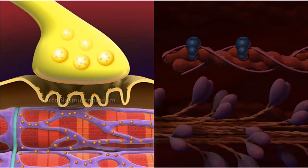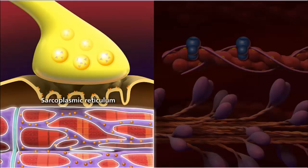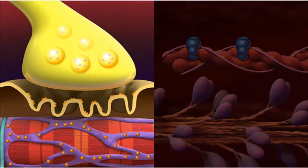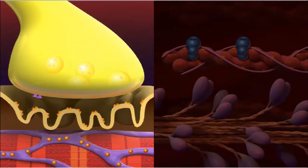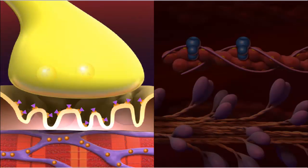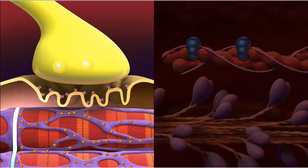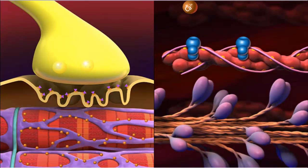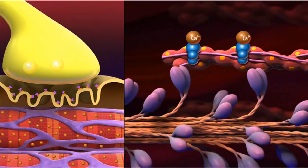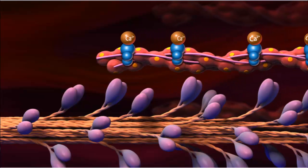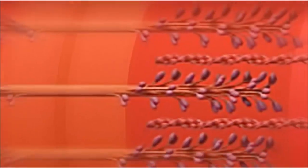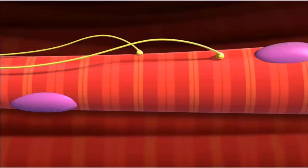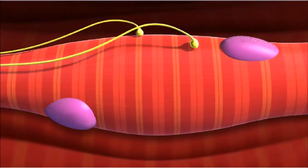Calcium ions are stored in the sarcoplasmic reticulum and are released in response to signals from the nervous system to contract. Neurotransmitter molecules are released from a neuron and bind to receptors, which depolarizes the membrane of the muscle fiber. The electrical impulse travels down the T-tubules and opens calcium stores. Calcium ions flow to the myofibrils, where they trigger a muscle contraction. As the actin and myosin slide along each other, the entire sarcomere shortens as the Z-lines draw closer to the M-line. As the sarcomeres in myofibrils contract, the entire muscle fiber will shorten.